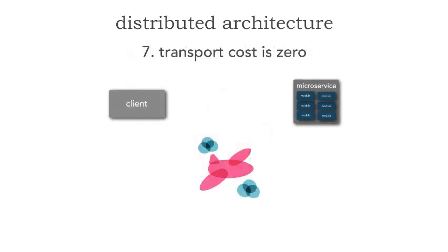My third favorite fallacy is fallacy number seven: the transport cost is zero. This does not mean latency. What it means is that as we break apart our monolith and create distributed architectures — say microservices or service-based architecture — we say, just go ahead and make a RESTful call, how expensive can that be? This fallacy is about the network infrastructure, the hardware, the licensing, the products needed just to make a simple RESTful call. The assumption in distributed architectures is that it's all there for us, but costs will increase in your network and hardware when we start distributing applications. That's what we call transport cost.